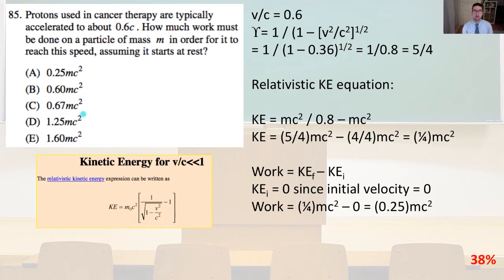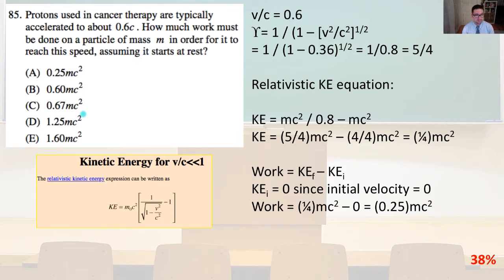Number 85. How much work must be done on a particle of mass M to reach this speed, assuming it starts at rest? V over C equals 0.6. The Lorentz factor gamma equals 1 divided by the square root of 1 minus V squared over C squared, which equals 1 divided by the square root of 1 minus 0.36 — since 0.6 squared equals 0.36 — giving 1 divided by 0.8, which equals 5 fourths.